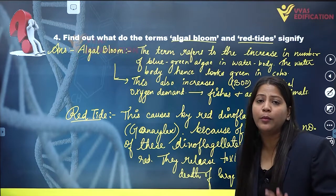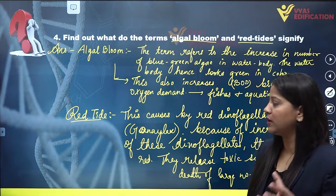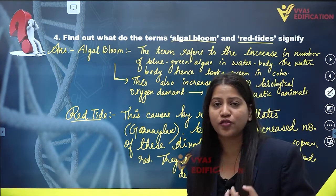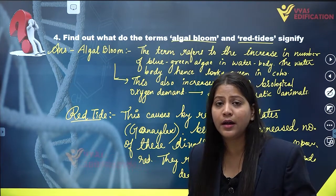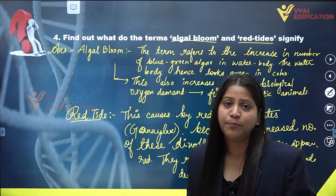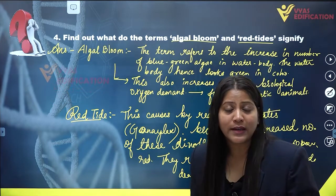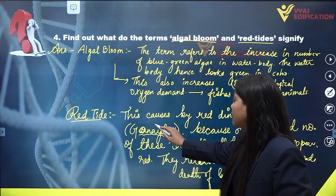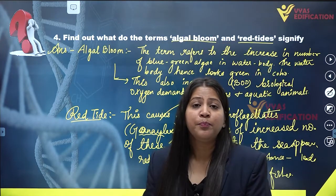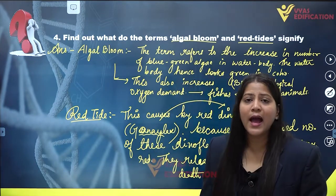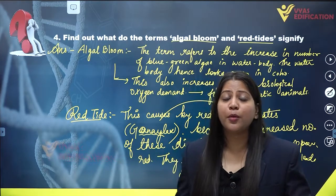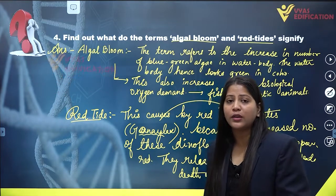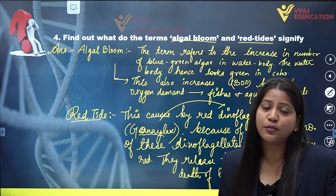This is the basic difference between algal bloom and red tide. Algal bloom is caused by cyanobacteria or blue-green algae, which increases biological oxygen demand, leading to the death of fishes. Red tide is caused by red dinoflagellates, specifically Gonyaulax, which makes the sea appear red and releases toxic substances that result in the death of large numbers of fishes and aquatic organisms.